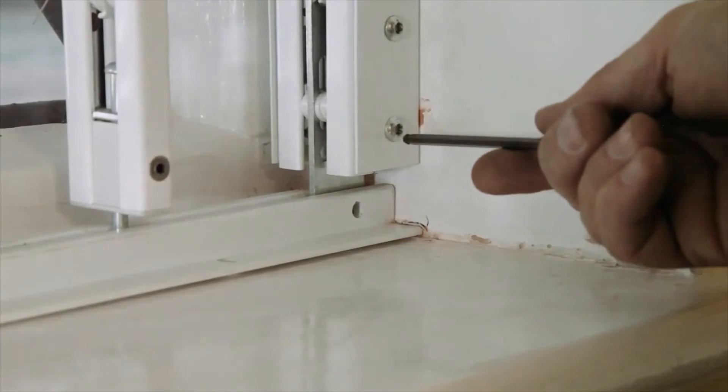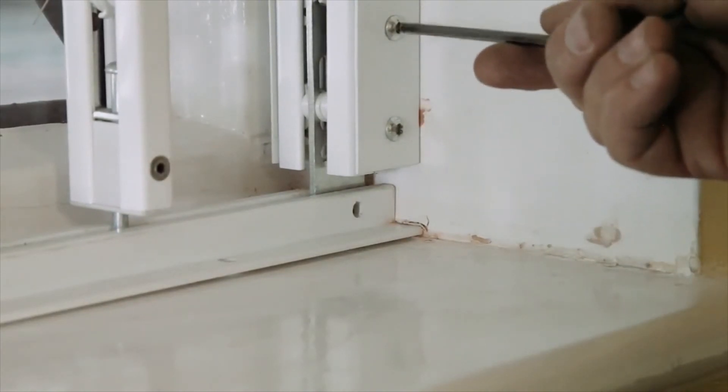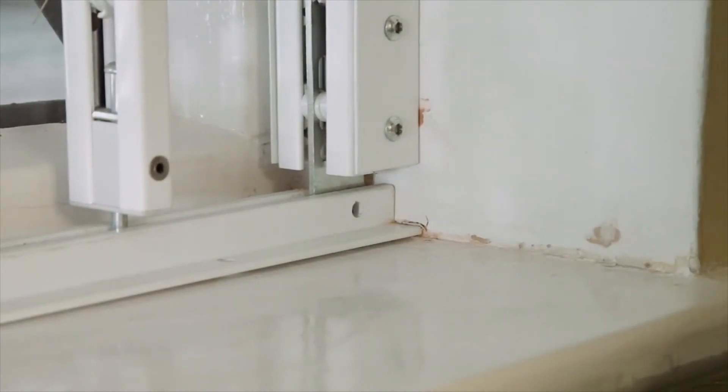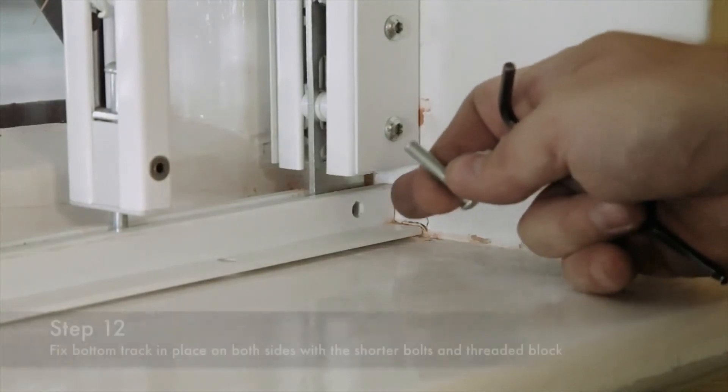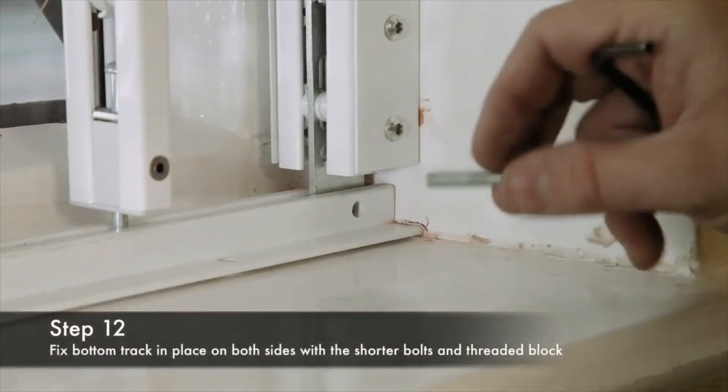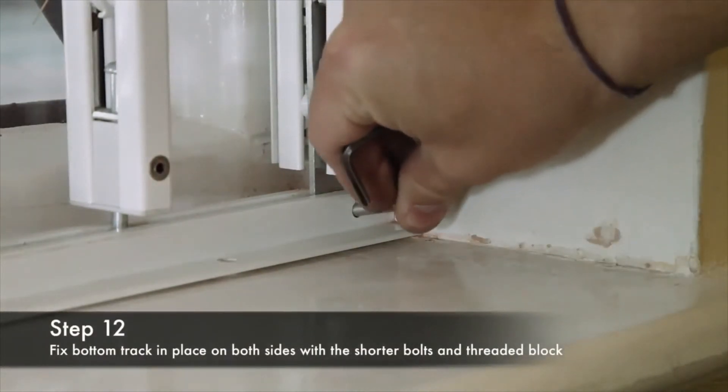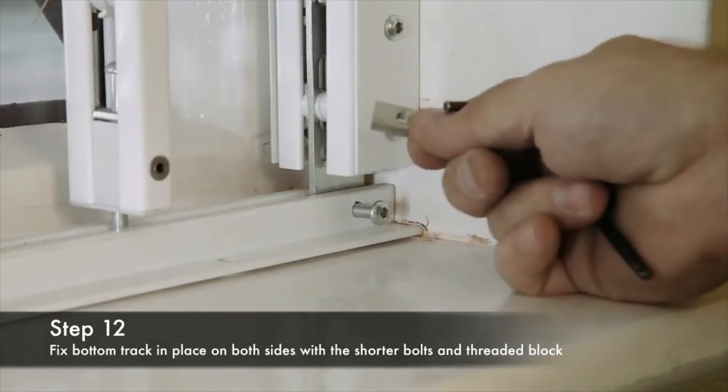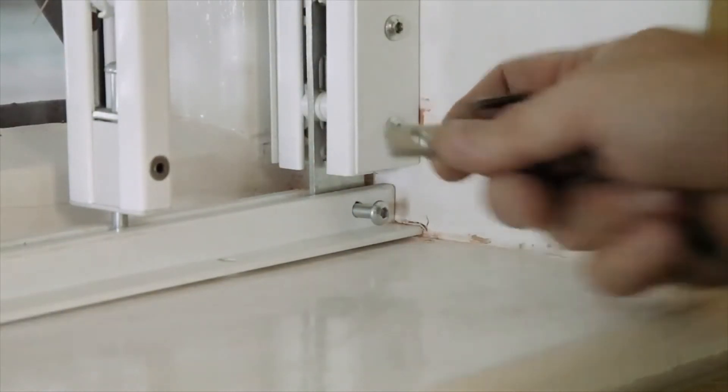Once you've got the longer bolts through the side panel, you're going to need to fit the shorter bolts through the bottom track, which is going to pass through here. And you're going to need to fit this threaded block around the back.